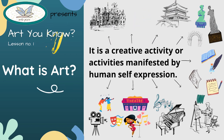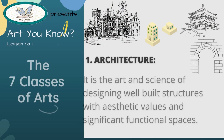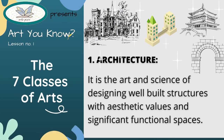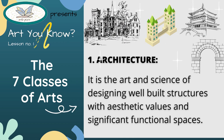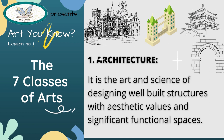There are seven classes of arts. First is Architecture — the art and science of designing well-built structures with aesthetic values and significant functional spaces. Do you know what is the oldest structure ever built in history?